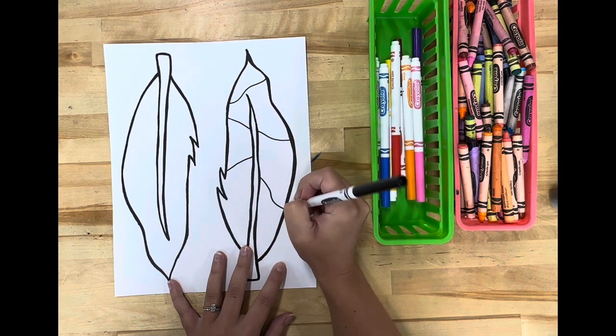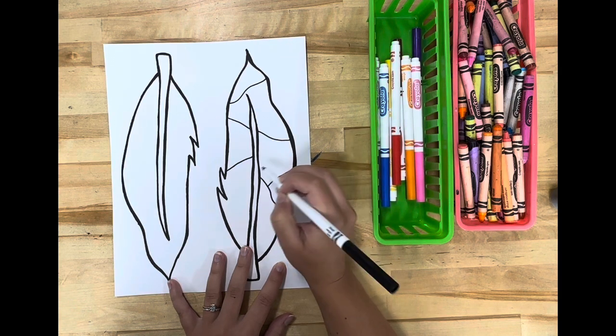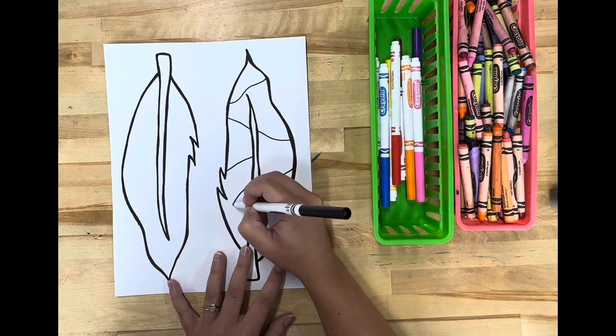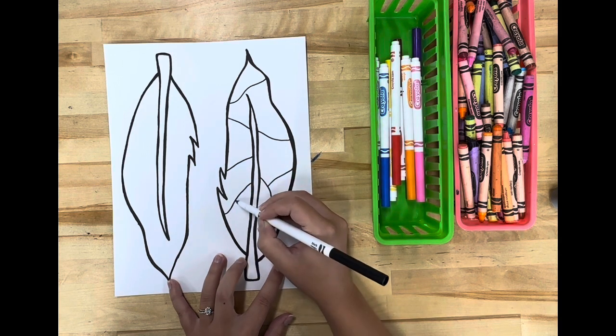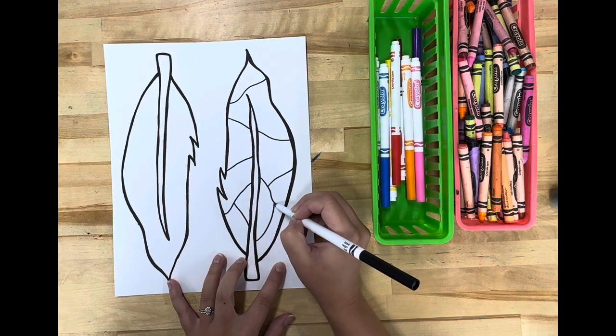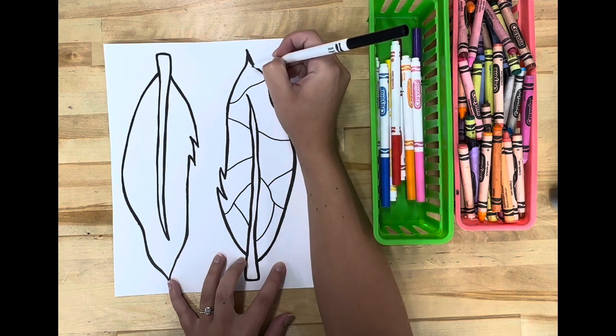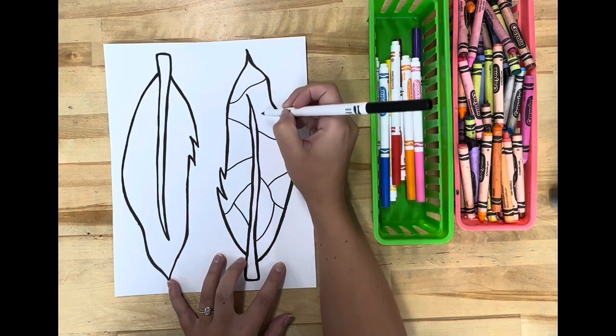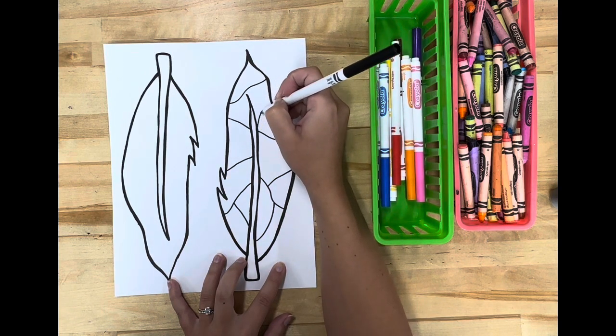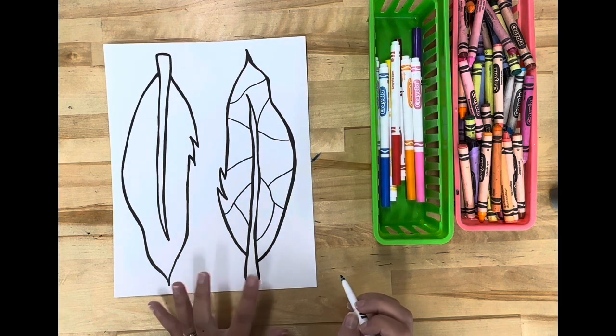You can use curvy lines or straight lines. It's your choice. I am using lines that are a little bit curvy to create my sections. Your sections should not be too tiny because remember you want to be able to fit your patterns in the sections. I think that this looks great.